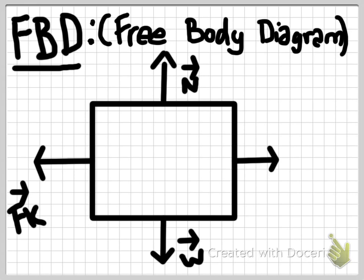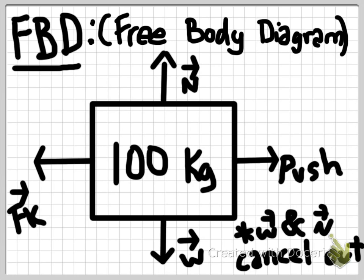Now, recognize that the arrow labeled push represents the force that the girl creates pushing on the box. This force creates a kinetic friction force making it harder for her to push the couch.